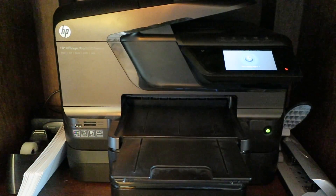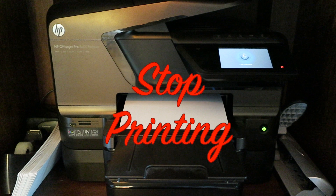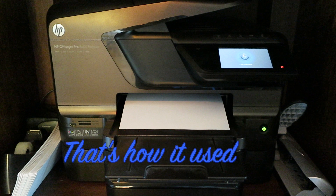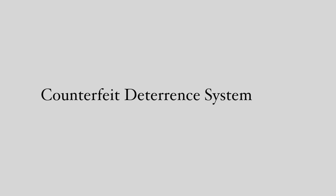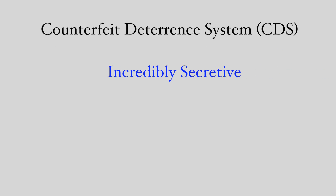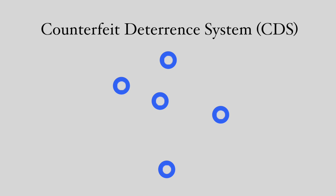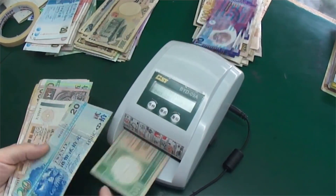Most photocopiers will, if they see this pattern of dots, stop printing in an attempt to stop counterfeit. At least, that's how it used to be. More recently, copiers have moved to a system called the counterfeit deterrent system, which is incredibly secretive and effective. Nobody is really sure how it works, and while the Orion constellation might be part of it, these security measures make it even more difficult to copy banknotes.